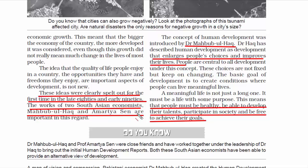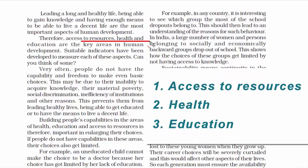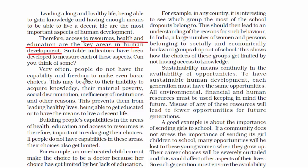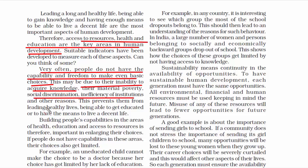If we summarize everything in three words, they are: access to resources, health, and education — the key areas in human development. Very often, people do not have the capability and freedom to make even basic choices because of lack of knowledge, social discrimination, inefficiency of institutions, and many other reasons. Many people are denied a healthy life, education, or the means to live decently. It's a vicious cycle and we need to break this cycle.